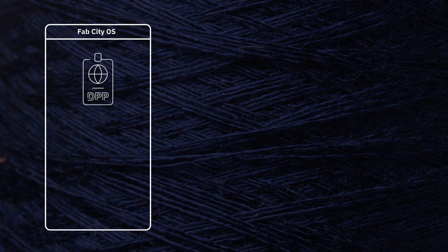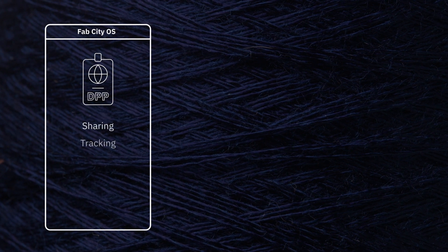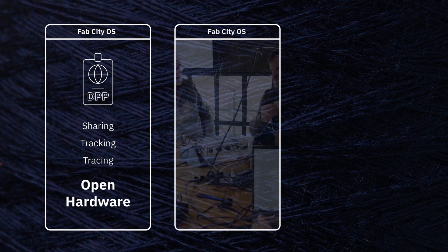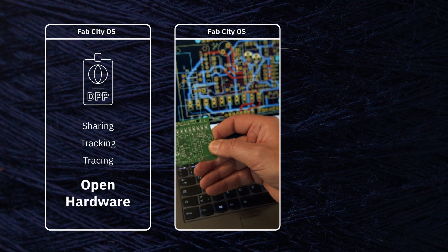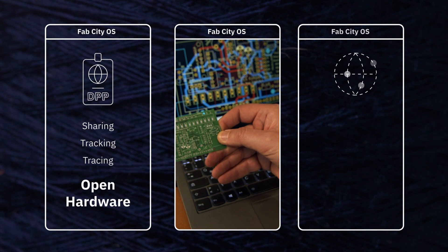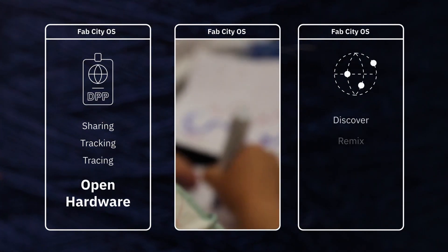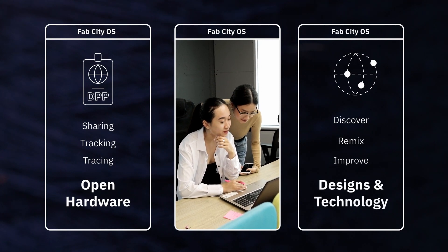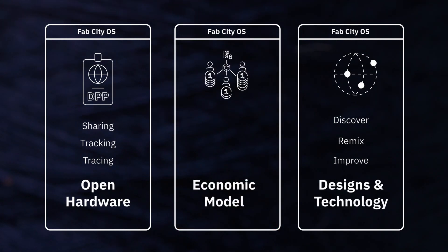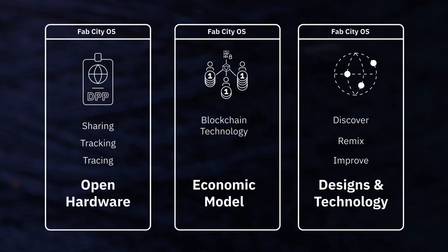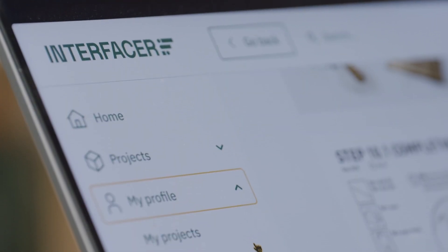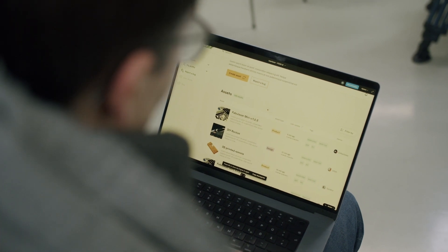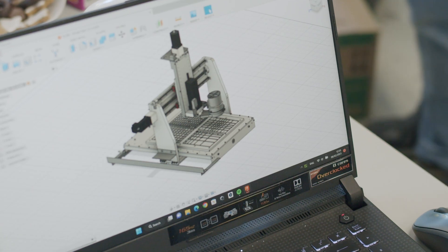The Fab City Operating System presents a revolutionary economic model supporting the sharing, tracking, and tracing of open hardware in a standardized form. This enhances collaboration and promotes fair agreements directly between users in a secure network. Globally connected productive communities are empowered to discover, remix, and improve designs and technologies like never before. This economic model, utilizing blockchain technology, facilitates fair revenue distribution based on contributions and agreements, offering a decentralized and equitable solution.